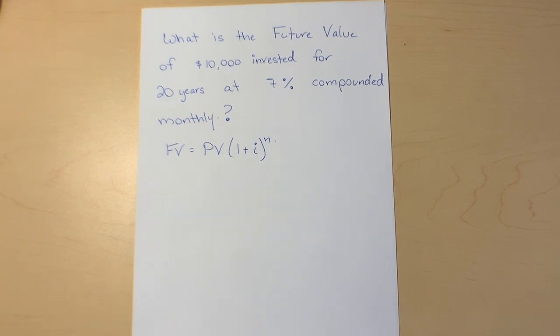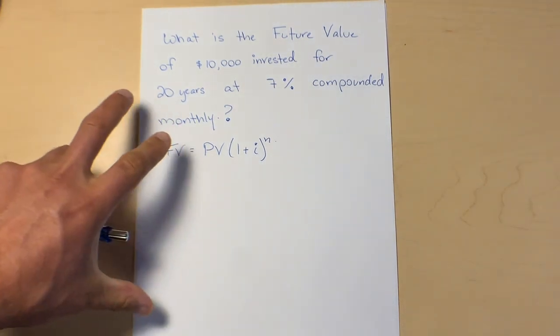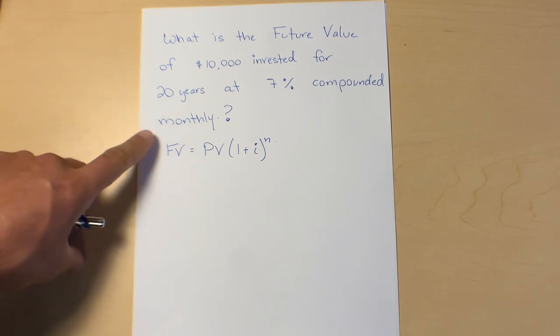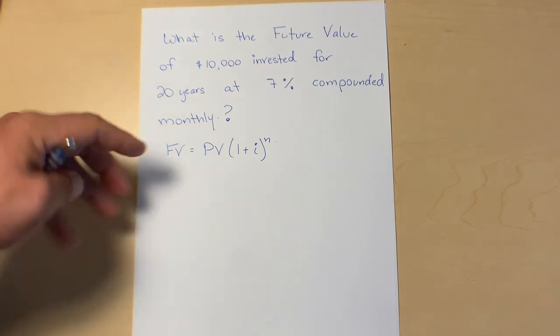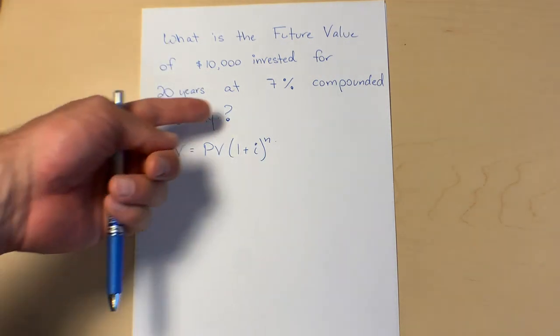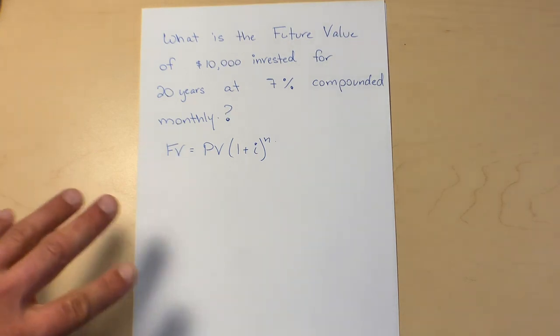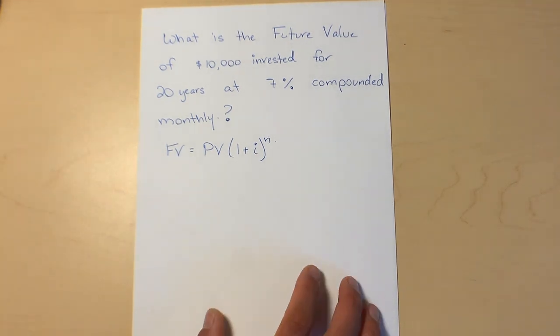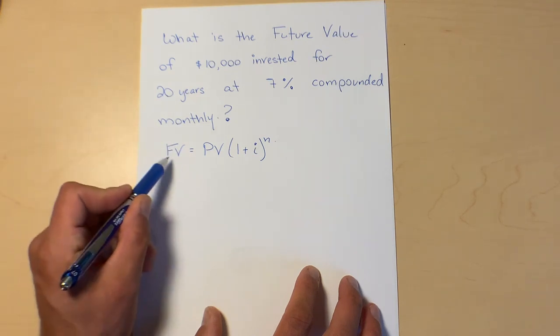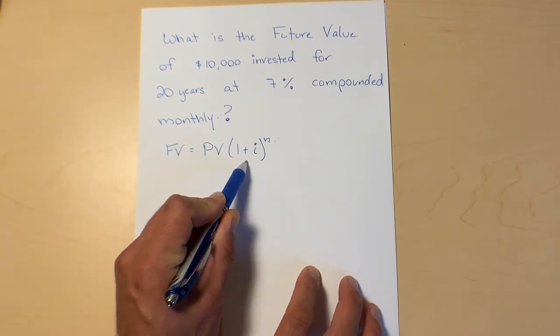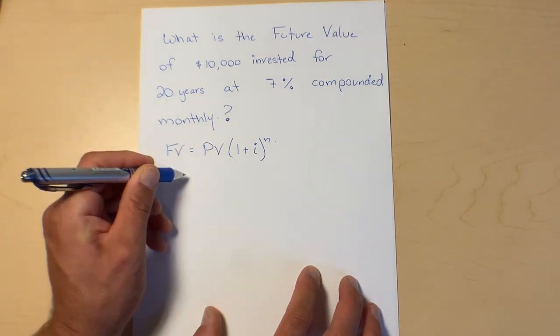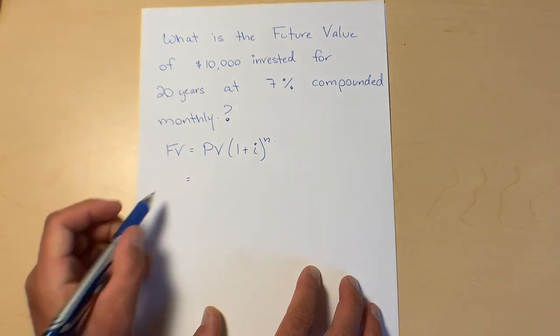What is the future value of ten thousand dollars invested for 20 years at seven percent compounded monthly. So we want this formula to do an interest calculation every month. And we're going to leave this ten thousand dollars invested for 20 years. We're going to assume that we're going to get seven percent for the entire duration of this investment. So I'm going to put in what we know. We don't know the future value but we know all of this stuff. So our present value right now is ten thousand dollars.